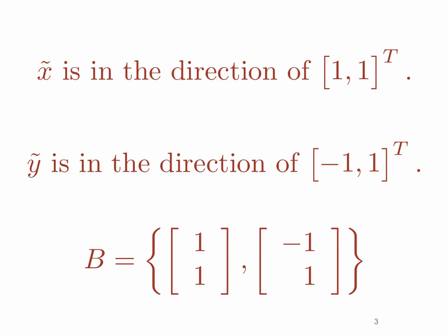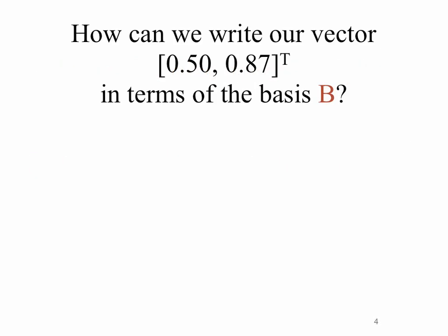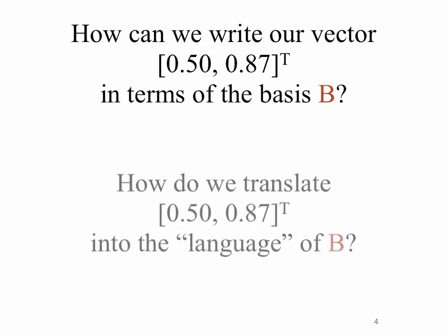Clearly, if you look at those vectors, you see they do form a basis because there are two linearly independent vectors in R2. So the question is: how can we write our vector (0.50, 0.87) in terms of the basis b? Another way to think of this is: how do we translate this vector into the language of the basis b?